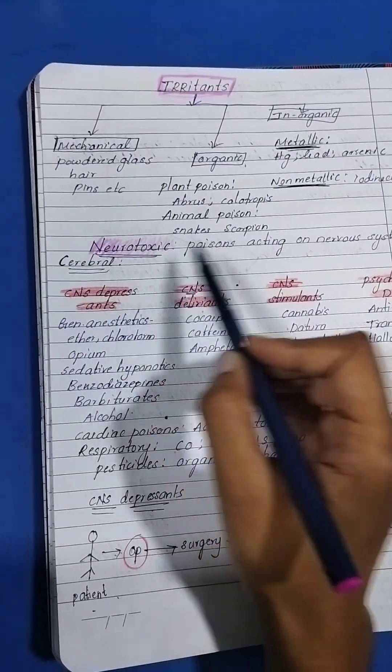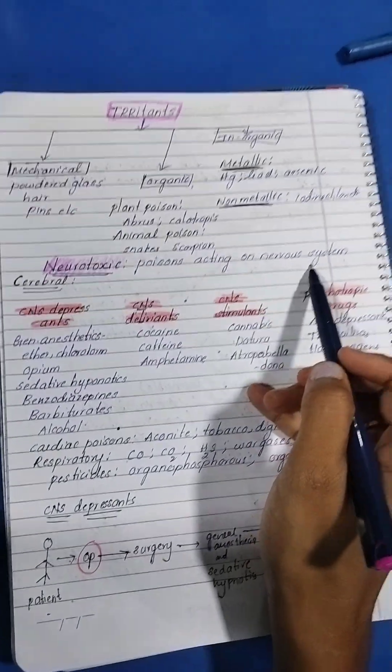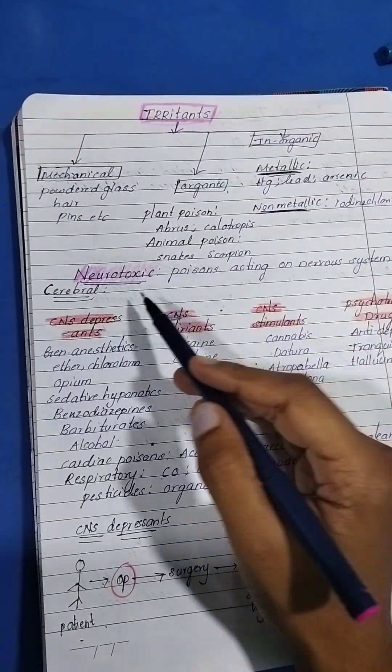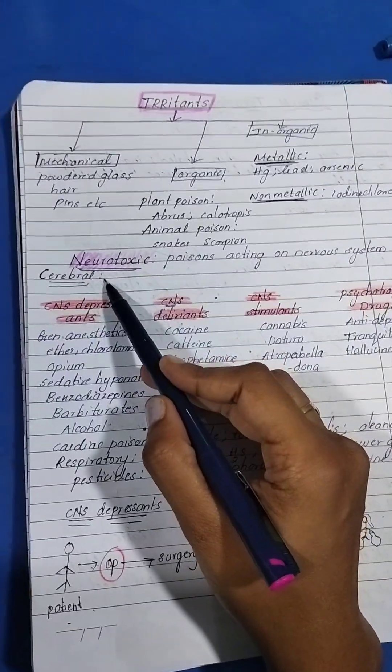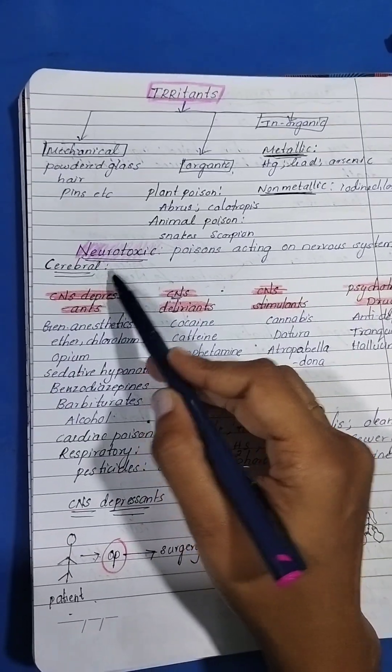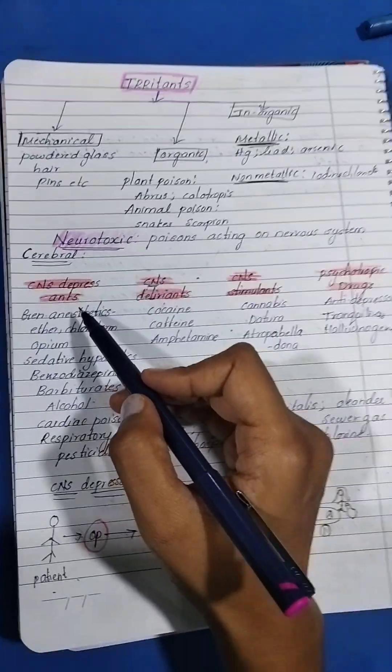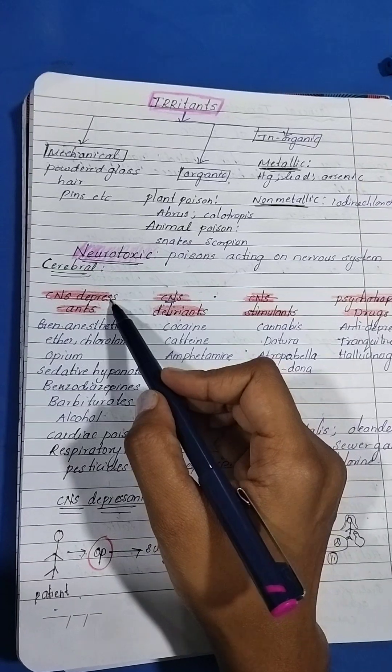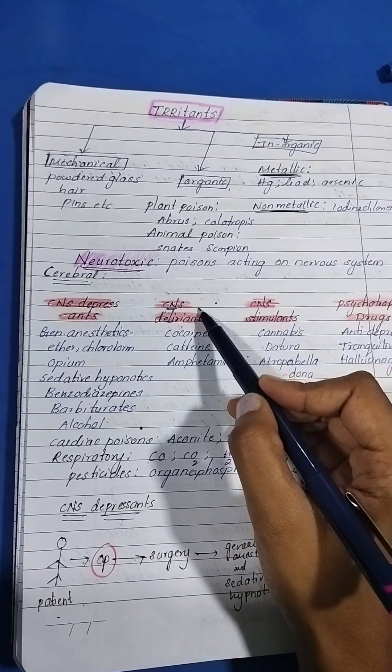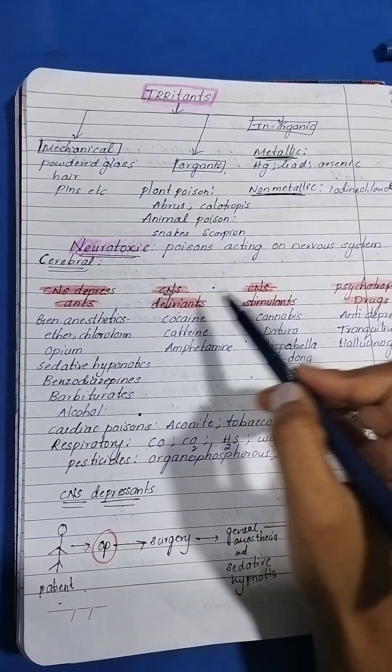Next, neurotoxic. The poisons acting on the nervous system are neurotoxic. We have cerebral and spinal. In cerebral we have CNS depressants, CNS delirants, CNS stimulants, and psychotropic drugs.